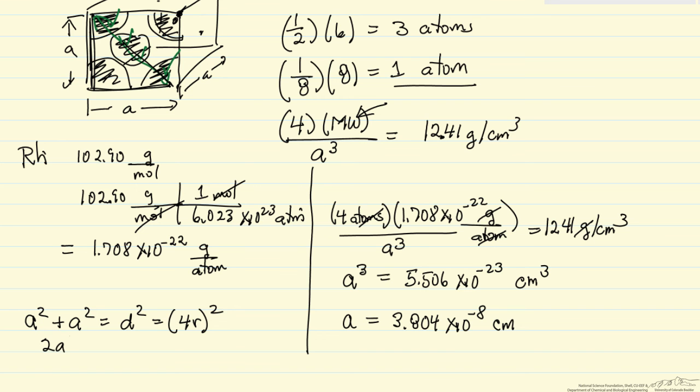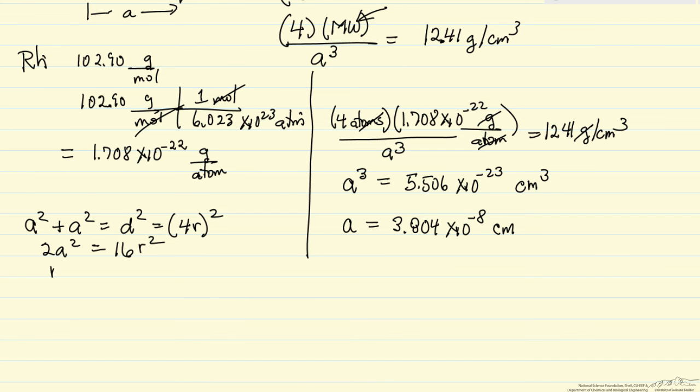So 2a squared equals 16 r squared. I'm interested in solving for r. So r squared is a squared divided by 8. That means r is equal to a over 2 times the square root of 2.